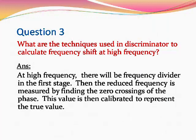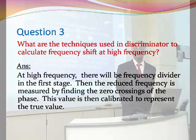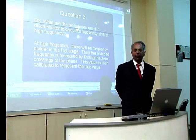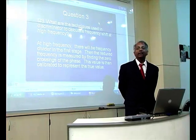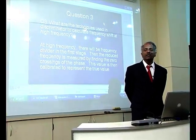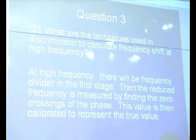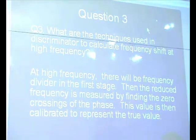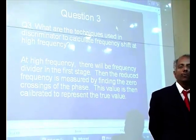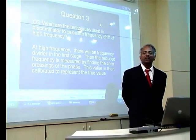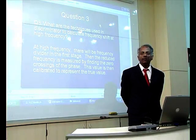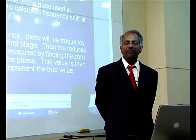Question: What are the techniques used in the discriminator to calculate the frequency shift at high frequencies? Answer: A discriminator gives us the frequency of the input signal. If the frequency is very high, we use a frequency divider in the first stage to reduce the frequency so that we can accurately calculate the zero crossings of the signal. Depending on the input signal frequency, we use a chain of 2 or 3 frequency dividers to bring it down to an acceptable value, measure the frequency, and then apply calibration depending on the number of reductions done previously.